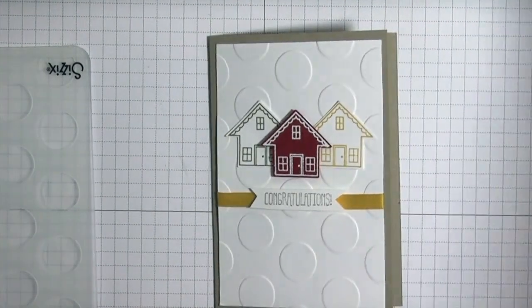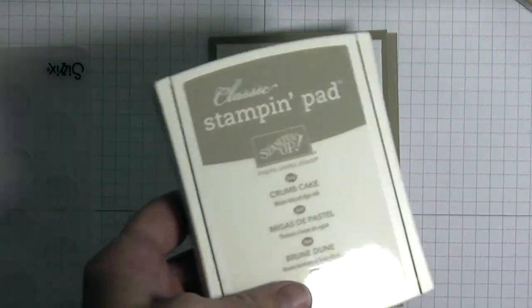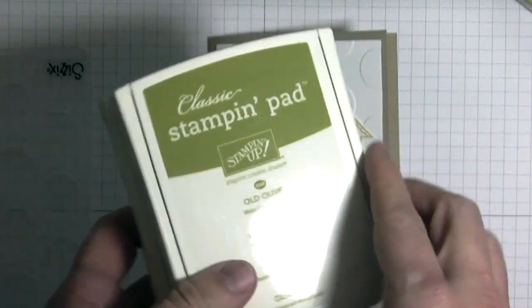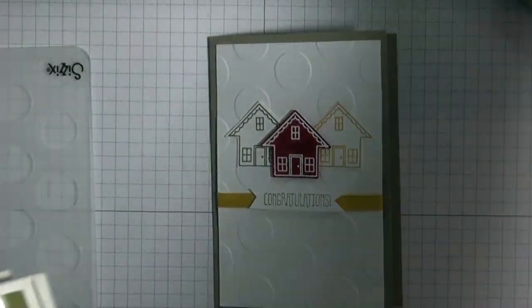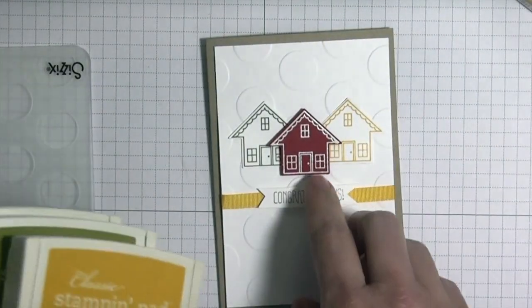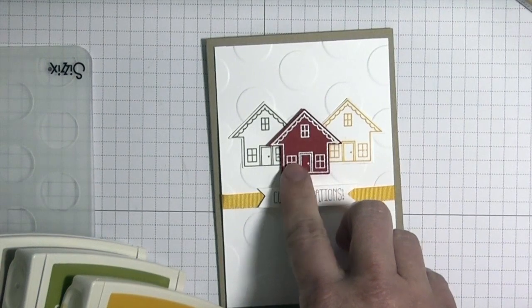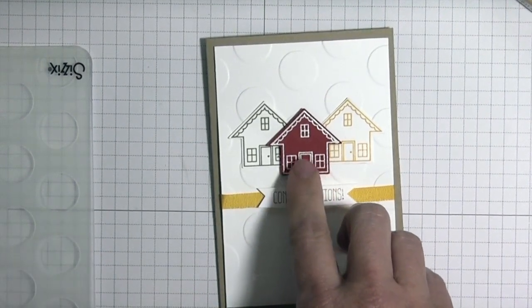The ink colors that I've chosen today are Crumb Cake, Old Olive, and Crushed Curry. I did do some white embossing on this Real Red cardstock.